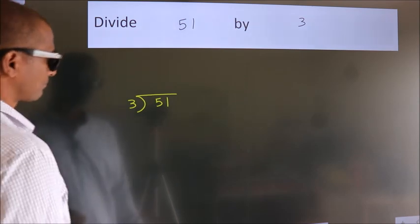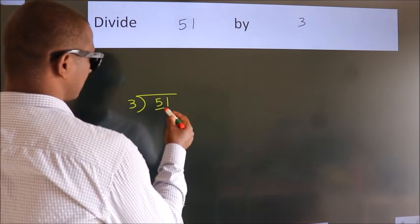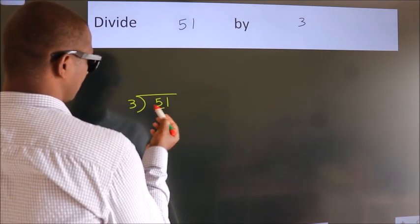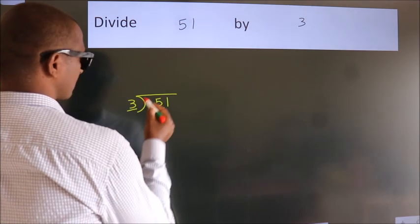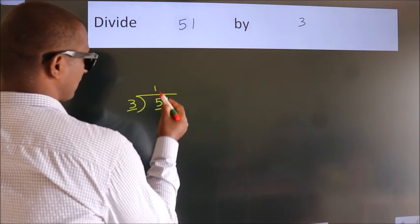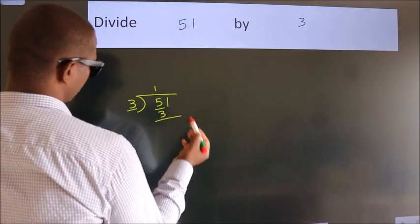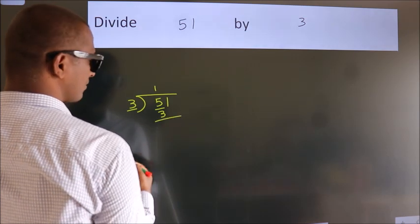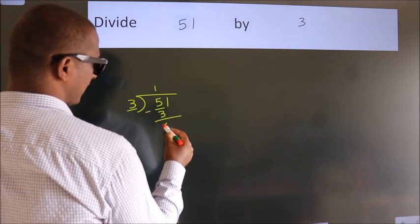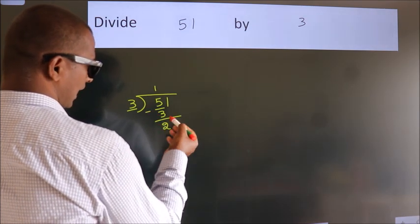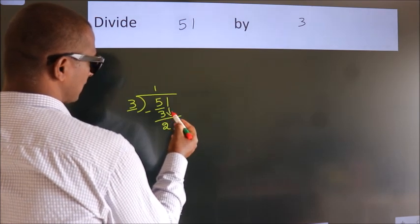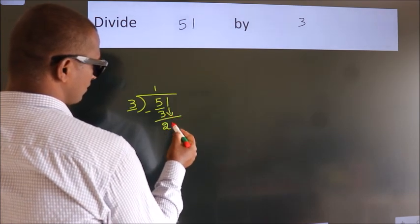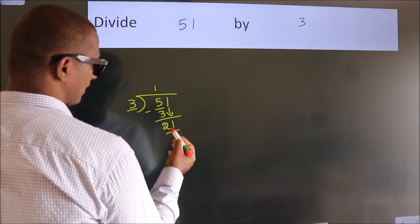Next, here we have 5, here 3. A number close to 5 in the 3 table is 3 once 3. Now we should subtract — we get 2. After this, bring down the beside number, so 1 down, giving us 21.